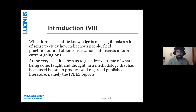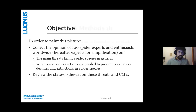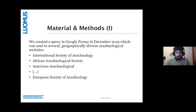In order to paint a picture of what these field practitioners think about spider conservation, we collected the opinions of 100 spider experts and enthusiasts — which I'll shorten to just 'experts' from now on. We asked them what were the most relevant threats facing spider species and what conservation actions were most relevant to prevent population and species declines. We then reviewed the state of the art on these threats and conservation measures to see what was already established. We did this by creating a query in December last year, which was initially sent to diverse arachnological societies such as the African Arachnological Society.